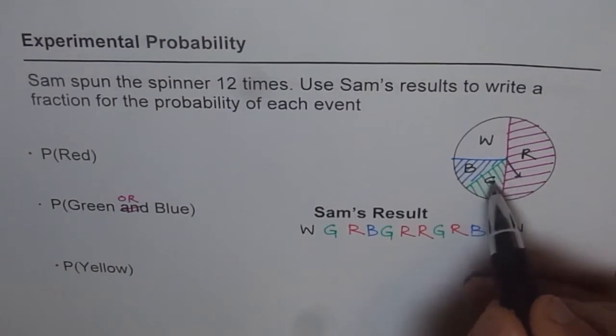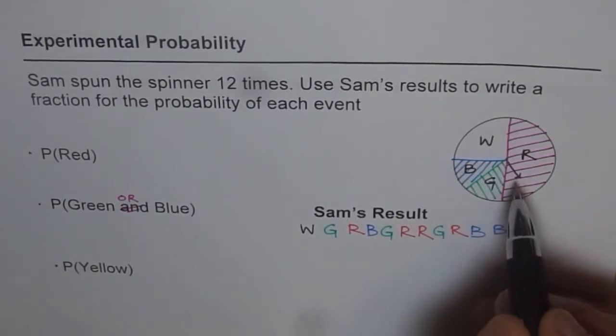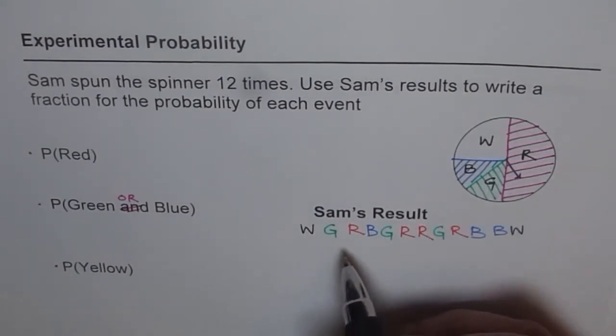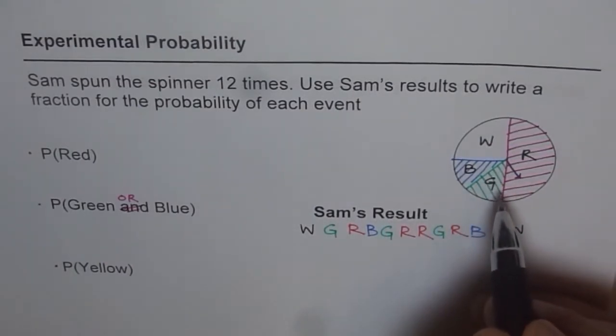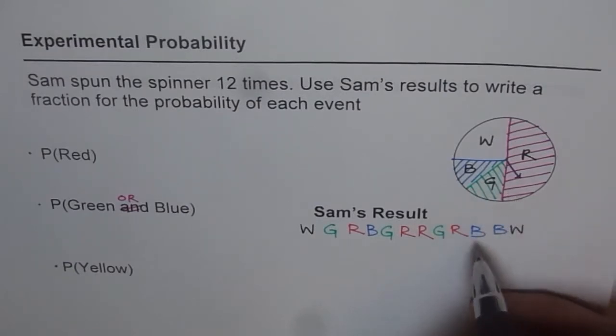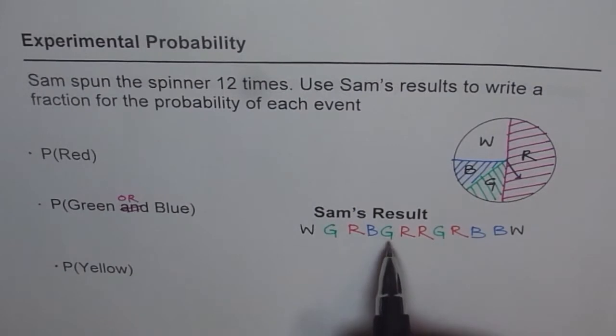That means you really spin it 12 number of times and then note where does the spinner fall or stop. Write it down. So that is the process which is repeated and it has been repeated 12 times. The results are given here. You have to consider these results to answer your question.